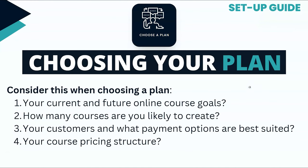What else do you need to consider when choosing your plan? Well, your current and future online course goals — how many courses do you want to have and do you want it to become a big passive income earner? Consider the number of courses you're likely to create. If you're creating two or three courses, you can start to create your membership or subscription model. Also consider your customers and what payment options are best suited to them — Stripe is a fantastic way for students to pay. And think about your course pricing structure: are they going to be premium, say over $500 per course, or are you selling for $20 per course?